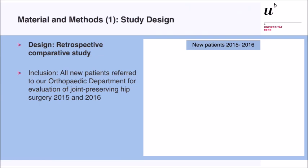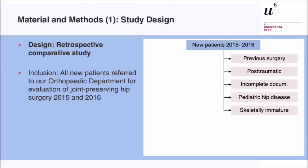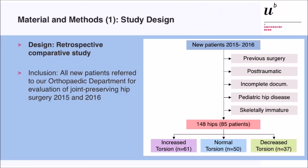We did a retrospective comparative study of all patients referred to our outpatient clinic between 2015 and 2016. We had to exclude many patients due to previous surgery, post-traumatic conditions, incomplete documentation, childhood problems, or skeletal immaturity. This left 146 hips in approximately 85 patients with full documentation and complete examination of all parameters. We subdivided them into three groups: increased torsion, normal torsion, and decreased torsion. CT scans covering the pelvis, knee, and ankle were obtained for all hips, allowing us to measure all desired parameters.